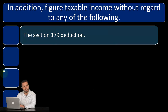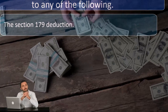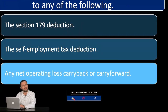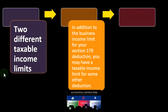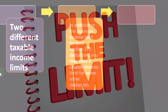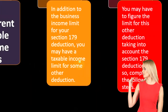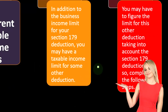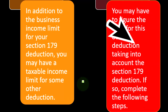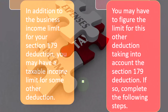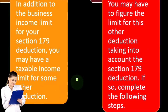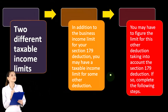In addition, figure taxable income without regard to the Section 179 deduction, the self-employment tax deduction, any net operating loss carryback or carryover, or any unreimbursed employee business expenses. There are two different taxable income limits: in addition to the business income limit for the Section 179 deduction, you may have a taxable income limit for some other deduction as well. You may have to figure the limit for this other deduction taking into account the Section 179 deduction. The question then becomes: which deduction is calculated first when multiple deductions each have income limitations?